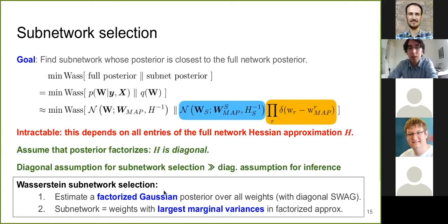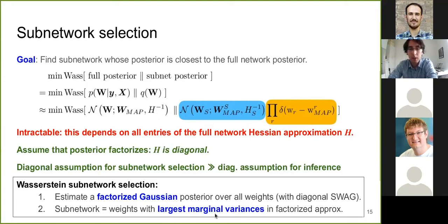There are many ways you could compute marginal variances for the weights. We found that a method called diagonal SWAG produces very good results when used to choose our sub-network, and it seems to work better than variational inference or diagonal Laplace approximation.